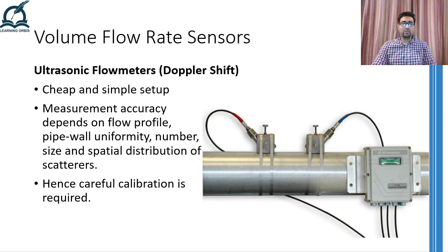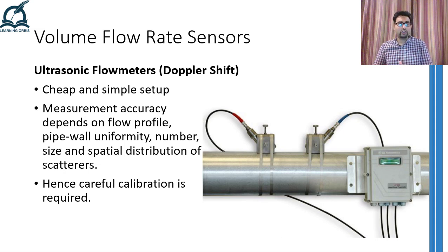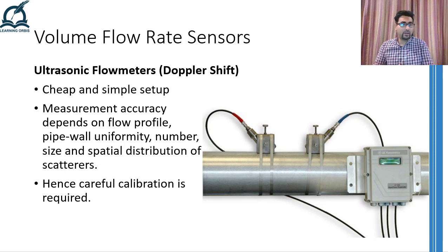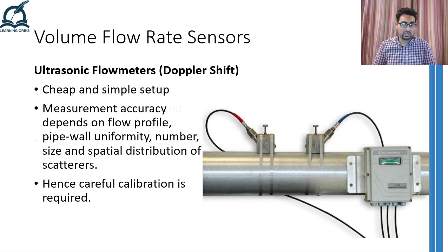Multiplying the speed of the fluid with the cross-sectional area of the pipe gives us the volume flow rate. The strength of the reflections received by the ultrasonic detector is dependent on a number of factors, for example the flow profile, uniformity and internal structure of the pipe, the number, size and spatial distribution of the particles present in the fluid creating the reflections, and many other things. Hence, careful calibration is required when using these kinds of flow meters.